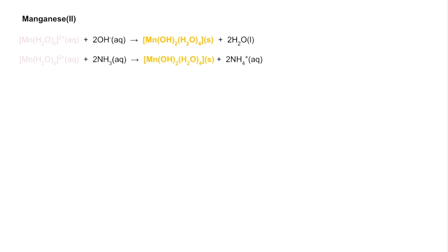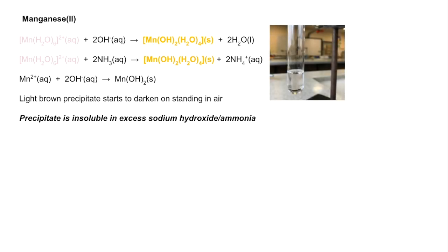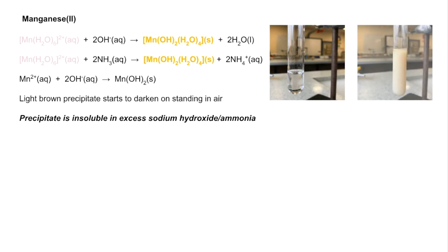Moving on to manganese 2+: the precipitation reaction gives a light brown precipitate of manganese 2 hydroxide, which starts to darken when left standing in air. It is insoluble in excess sodium hydroxide and aqueous ammonia. In terms of appearance, you have a very pale pink solution going to a light brown solid precipitate.